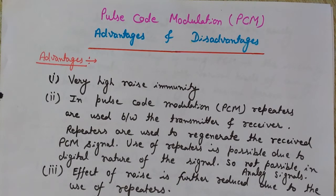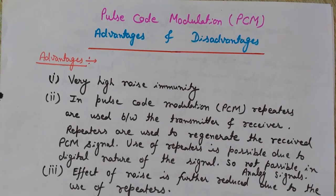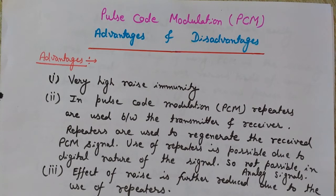Pulse code modulation is a technique used to transmit analog signals in digital form. To convert analog signals into digital or binary form, the analog signal is first converted from the continuous time domain into discrete time domain with the help of the sampling process. When we sample a signal, the signal that is continuous in time converts into a signal that is discrete in time — it does not have a value at every instant of time.